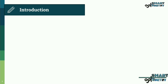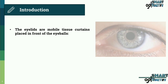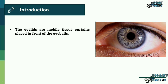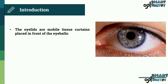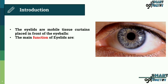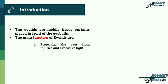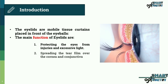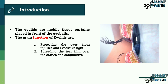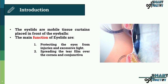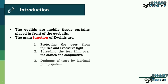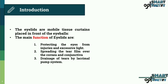Now let's start with the introduction. The eyelids are mobile tissue curtains placed in front of the eyeballs. The main functions of eyelids are: protecting the eyes from injuries and excessive light, spreading the tear over the cornea and conjunctiva, and drainage of tears by the lacrimal pump system.